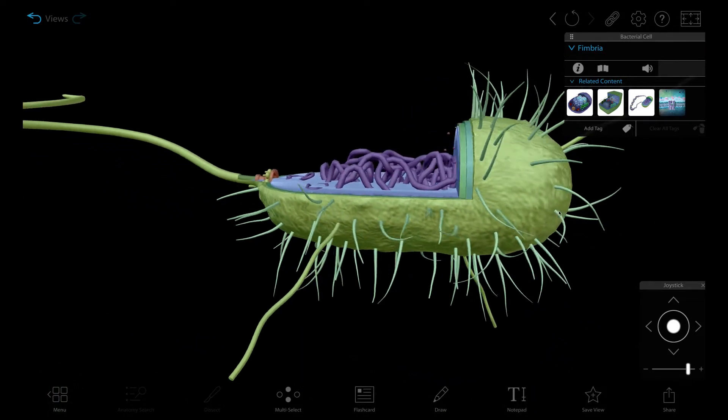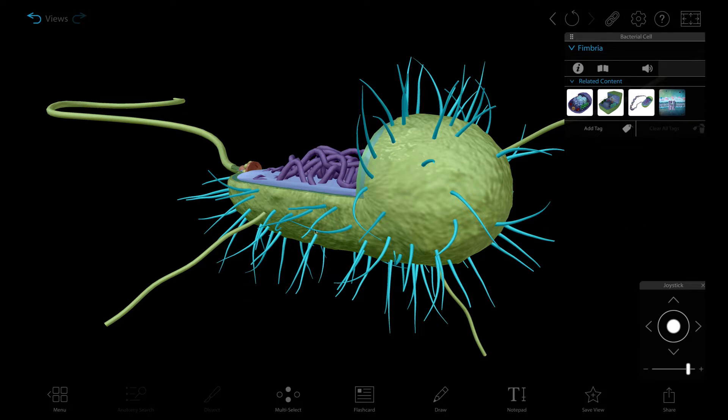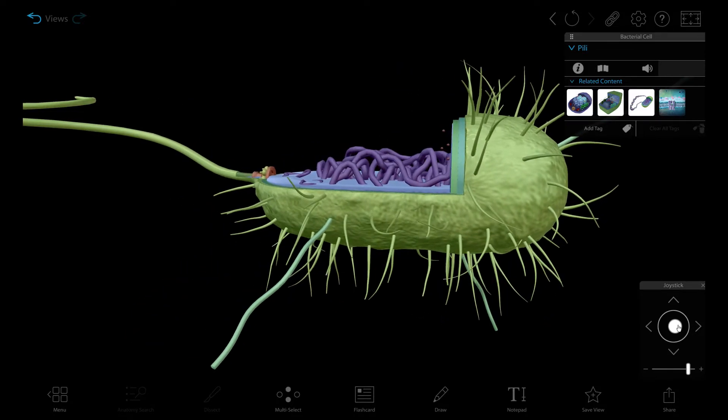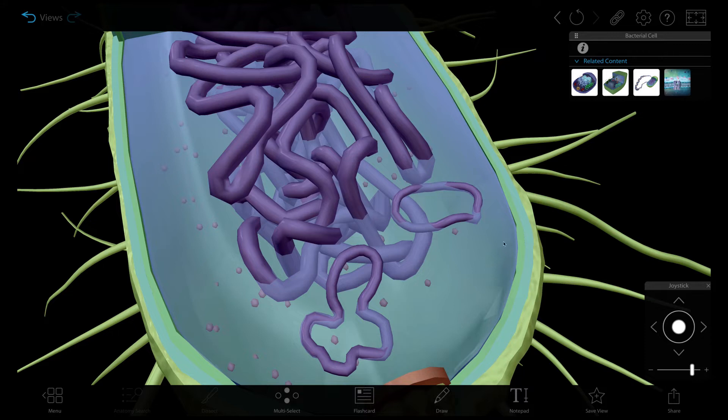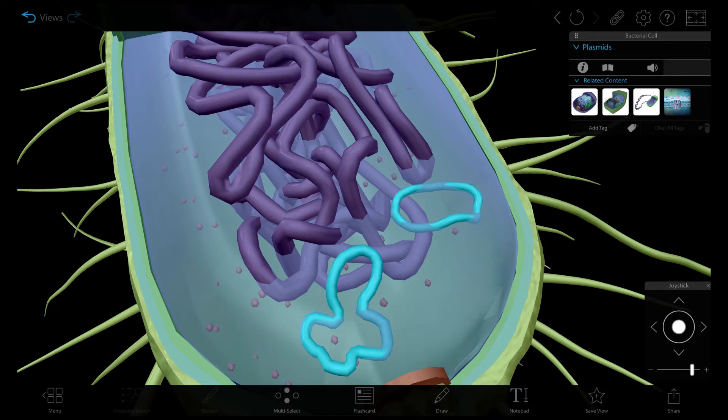These fimbriae and pili aren't just for sticking to things within the environment. They can also help the bacteria interact with each other and even make more bacteria. When one bacterium loves another bacterium very much, they can undergo a sort of sexual reproduction called bacterial conjugation. During this process, they combine genetic forces by exchanging small circular pieces of DNA called plasmids that contain a much smaller number of genes.